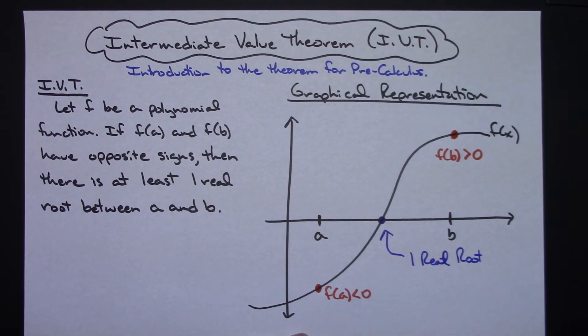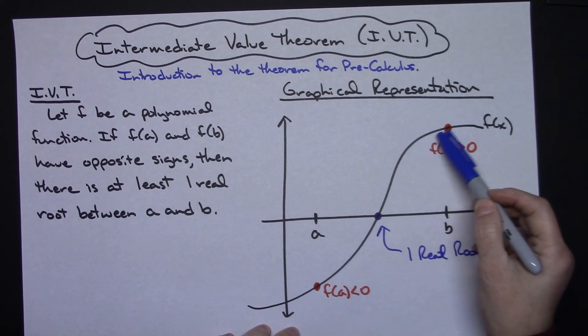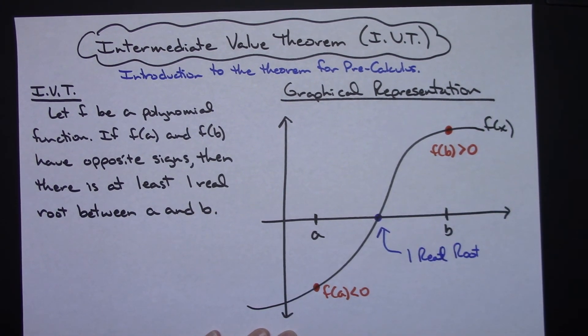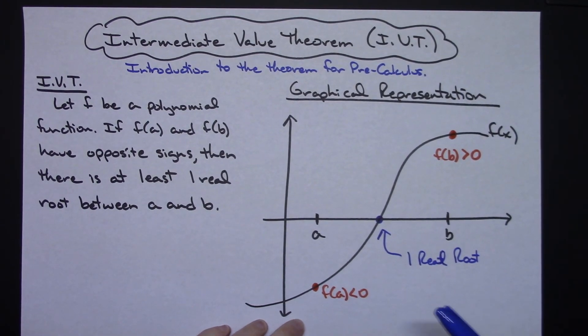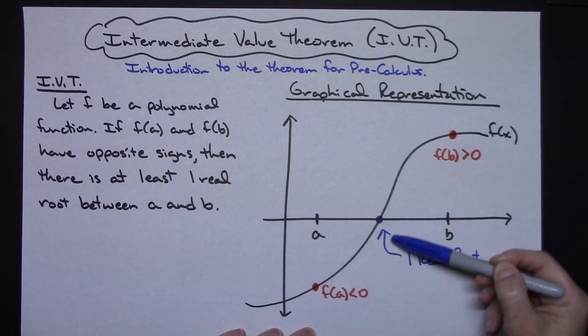Now the reason we say at least one real root is because if it's a pretty simple curve and it moves like that, well then it's only going to cross that x-axis once.